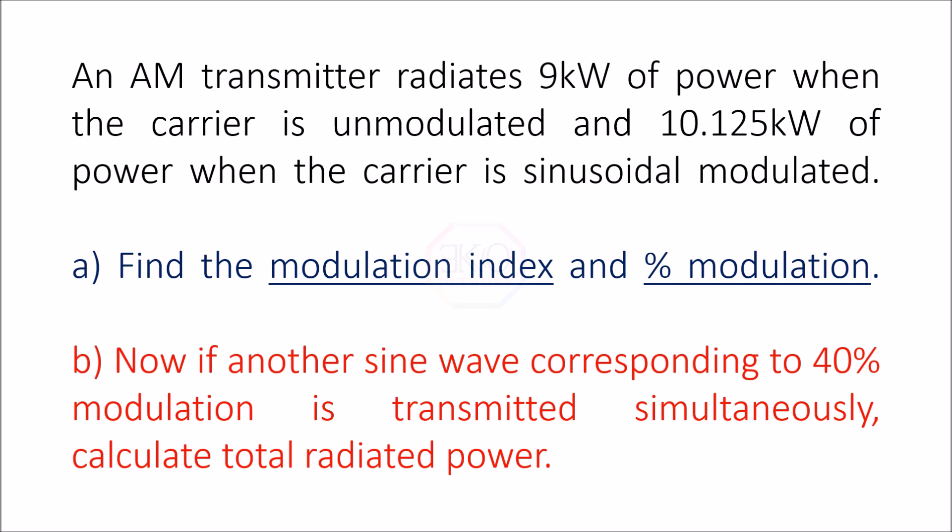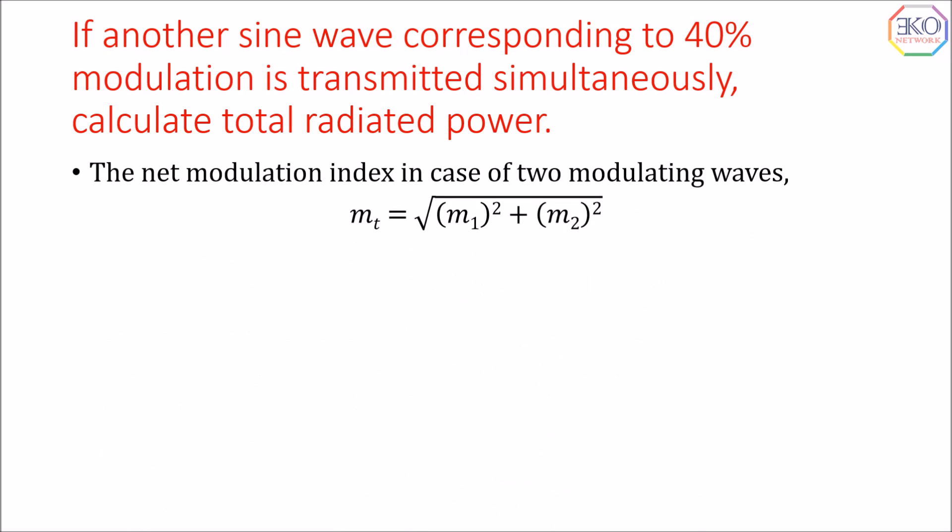The second part involves multi-tone modulation where two modulating signals are transmitted simultaneously. We calculate the net modulation index mt. For two modulating waves, mt = √(m1² + m2²). For three waves there would be an additional m3² term under the square root, and so on. Here we have only two waves, giving two modulation indices. m1 = 0.5, calculated in the first half.